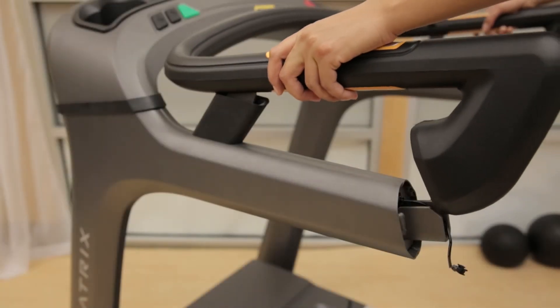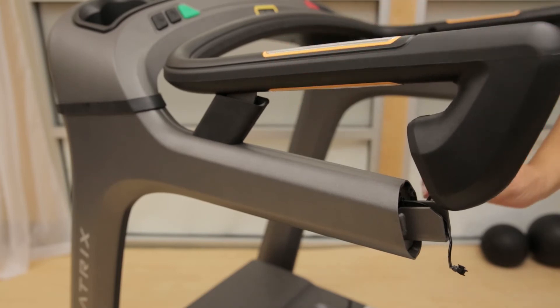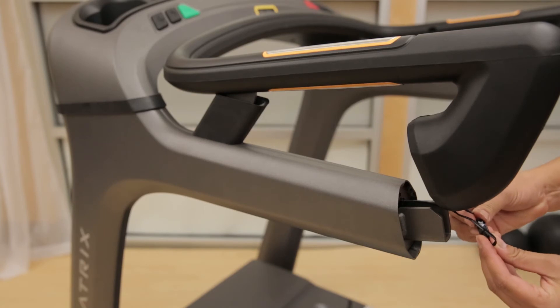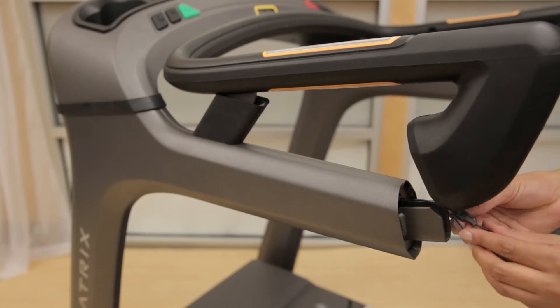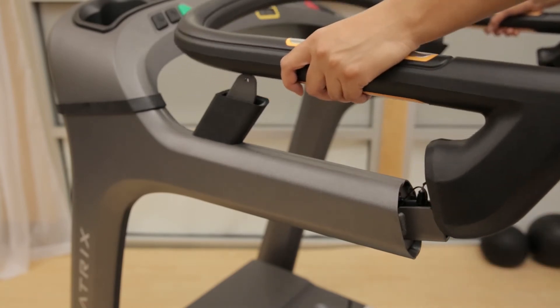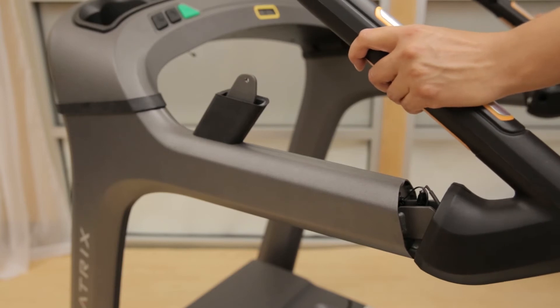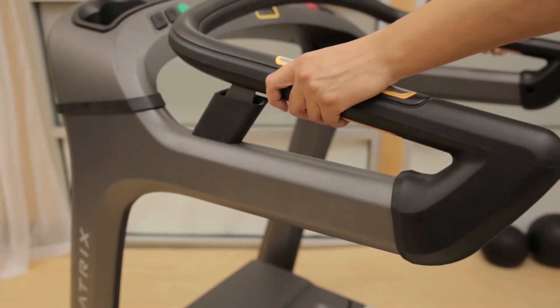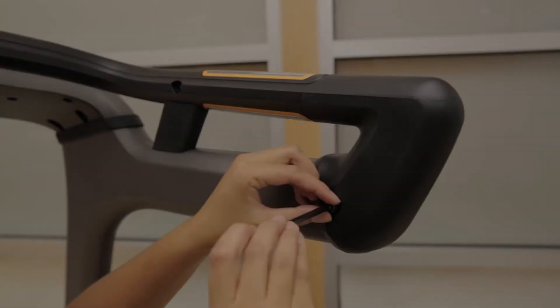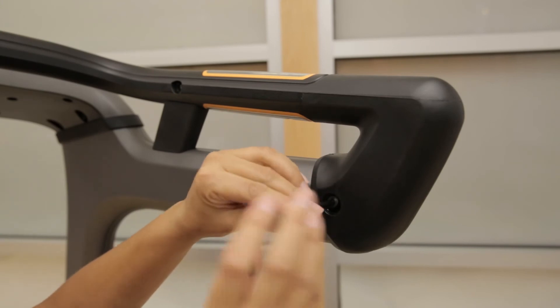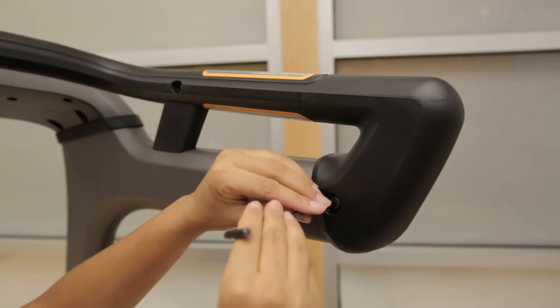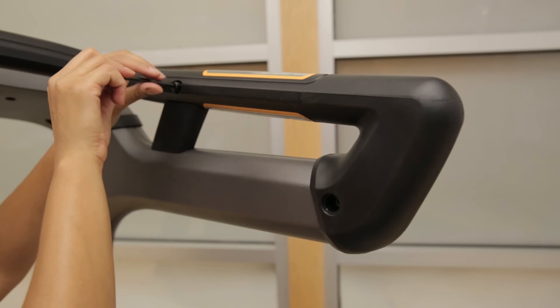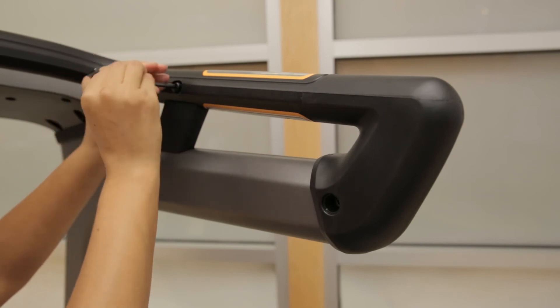Set the handlebar onto the console masts to attach the wires. Then, tuck the wires into the mast and secure the handlebar to the masts. Use a 6mm Allen wrench for the two rear bolts and a 5mm Allen wrench for the front bolt on each side.